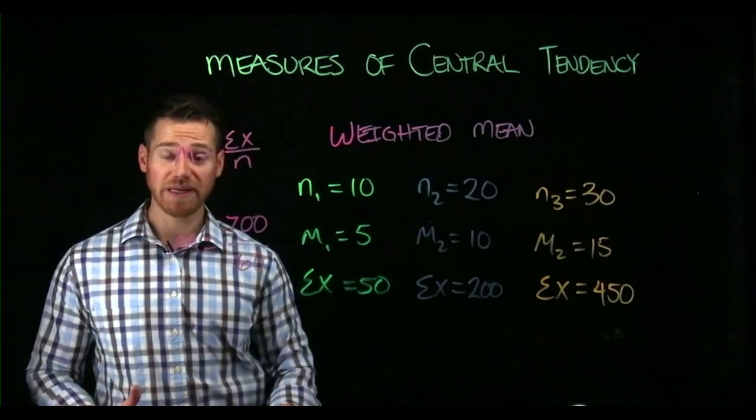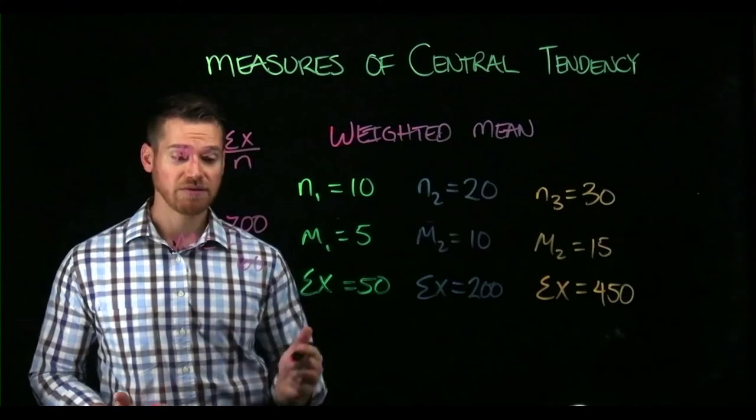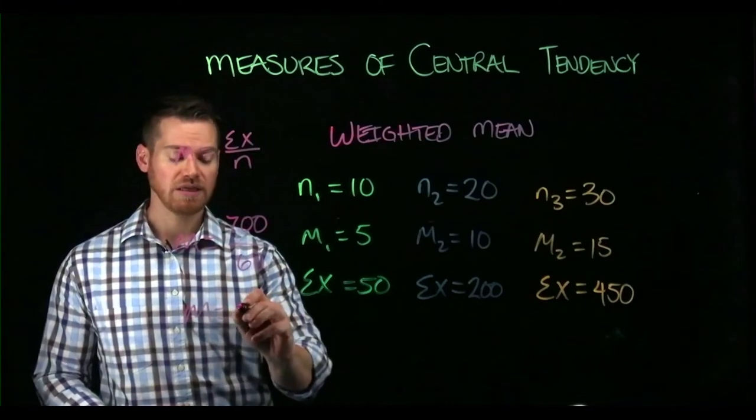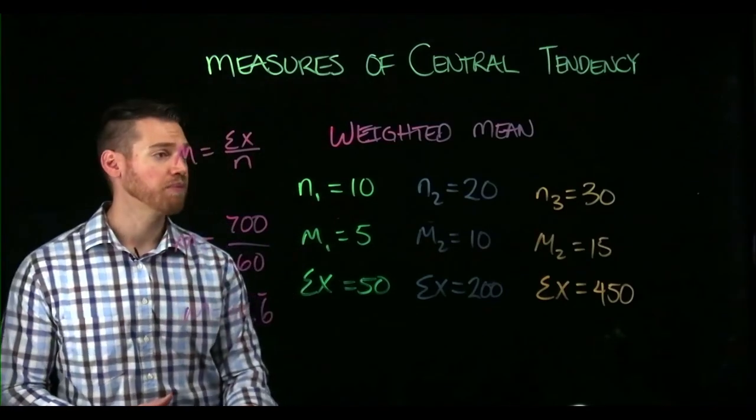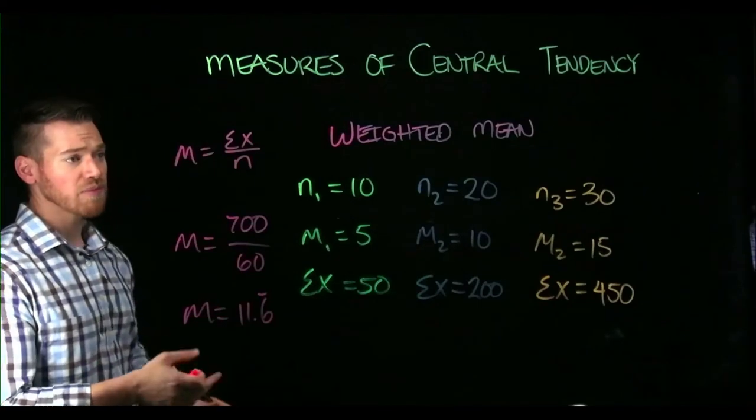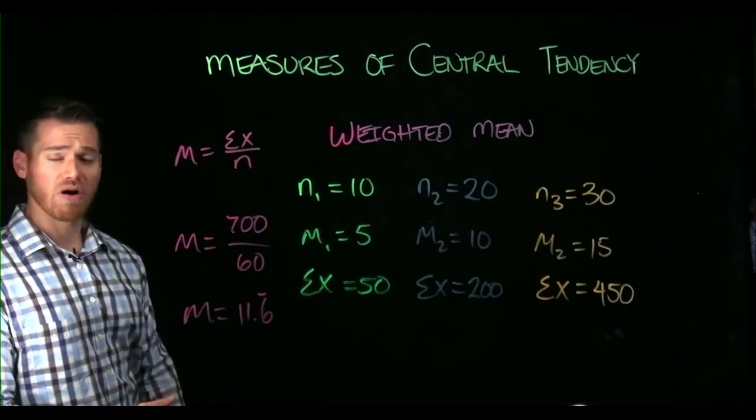So now we can use this information to get the weighted mean. And the weighted mean would be 700 over 60 is 11.6 repeating. So here we've been able to obtain what is the weighted mean by putting together the information from all of these samples.